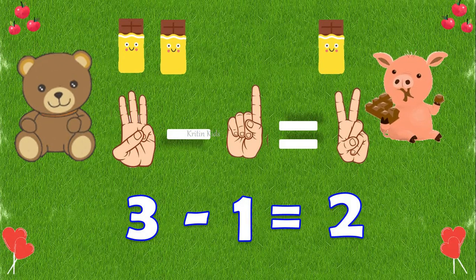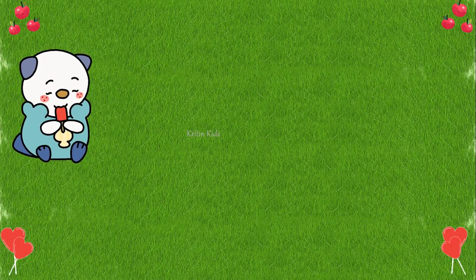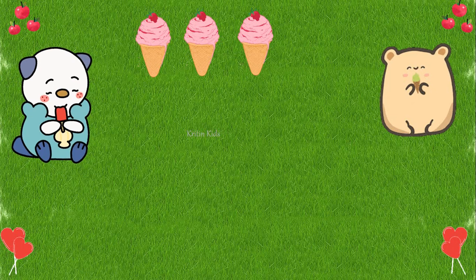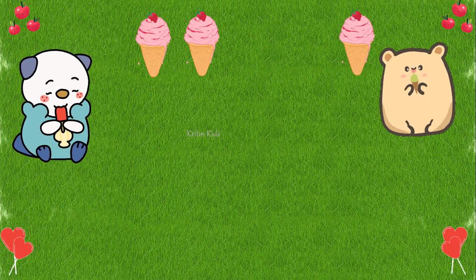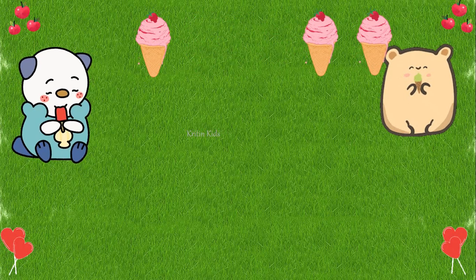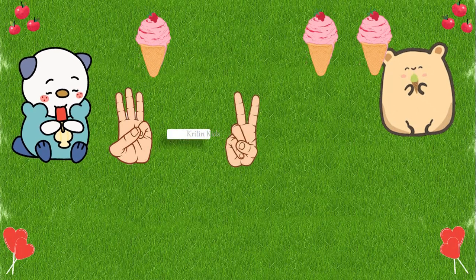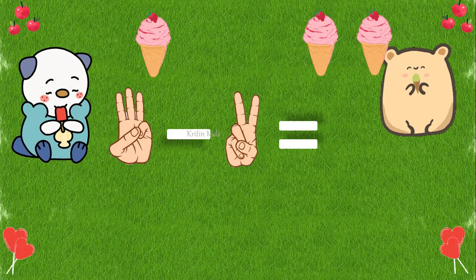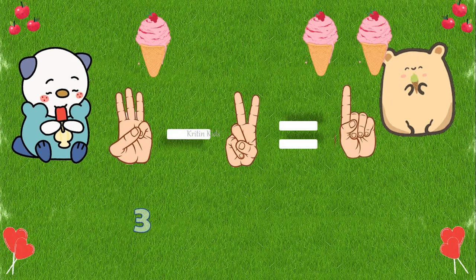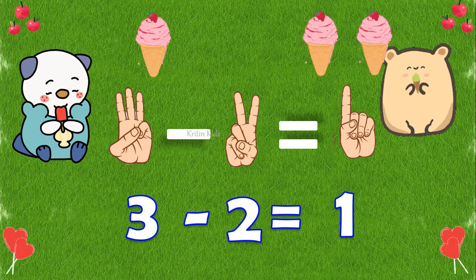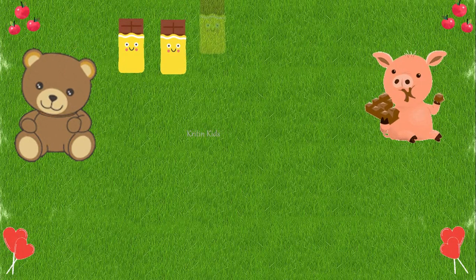I love ice cream! One, two, three — I have three ice creams and I gave one, two — two ice creams to my friend. Now how many ice creams do I have? I had three ice creams minus two I gave to my friend, so I should close two fingers. I am left with one finger, meaning three minus two equals one.